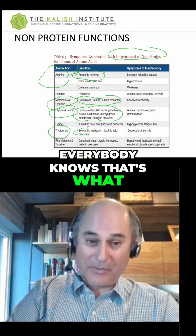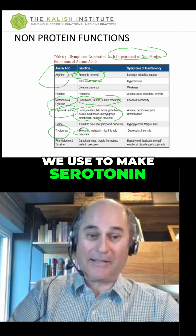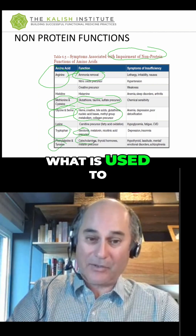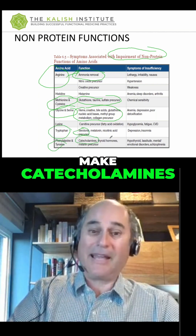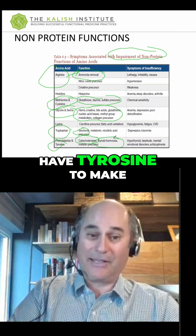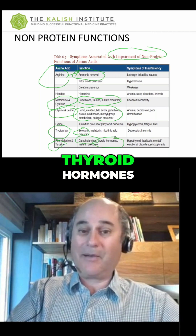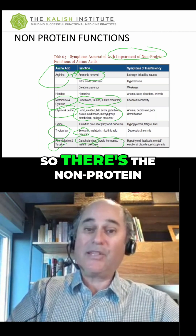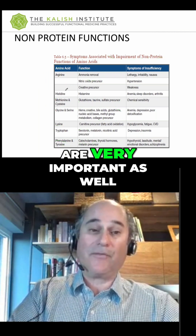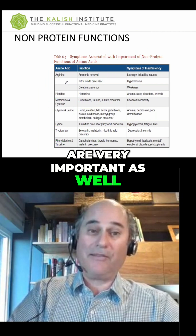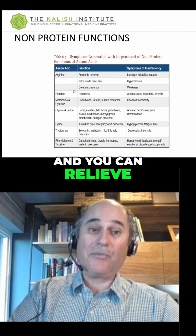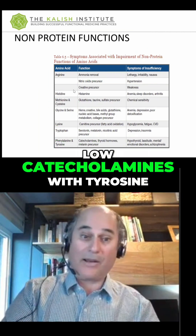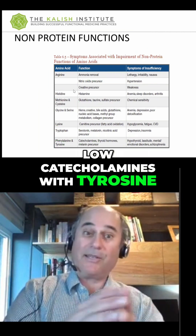Everybody knows that tryptophan is what we use to make serotonin. Tyrosine — we all know that's what is used to make catecholamines, and you have to have tyrosine to make thyroid hormones. So these non-protein roles are very important, and you can relieve a lot of symptoms from treating low catecholamines with tyrosine.